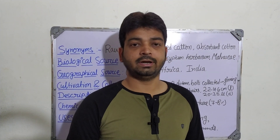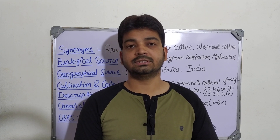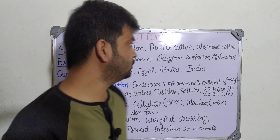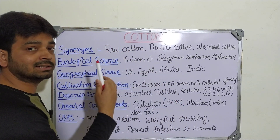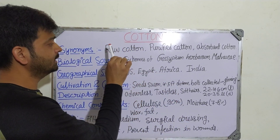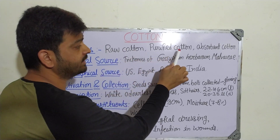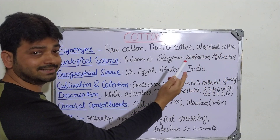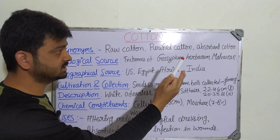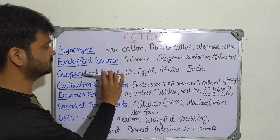Hello students, now we are going to discuss about cotton. It comes under the plant fibers. Coming to the cotton, its synonyms — other names — depend on how it is collected: it is called raw cotton, purified cotton, or absorbent cotton. The name given depends on how the cotton is processed.